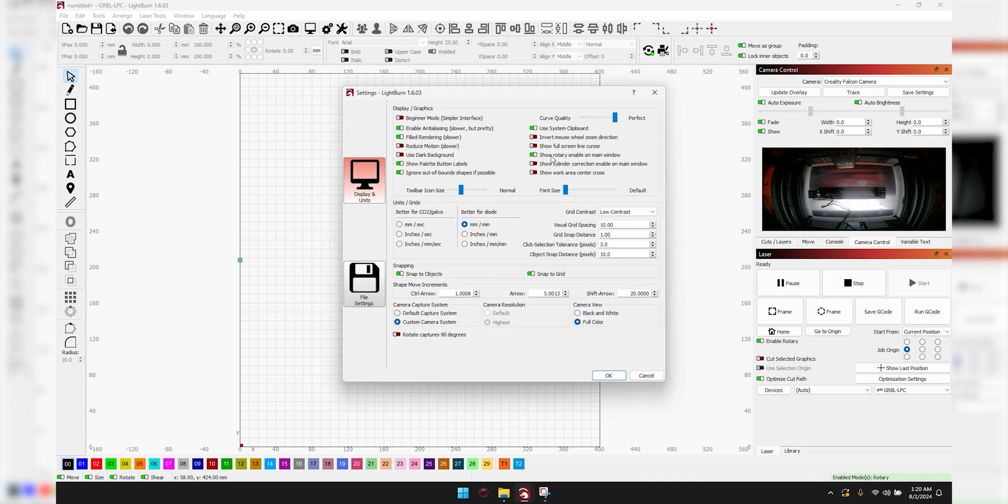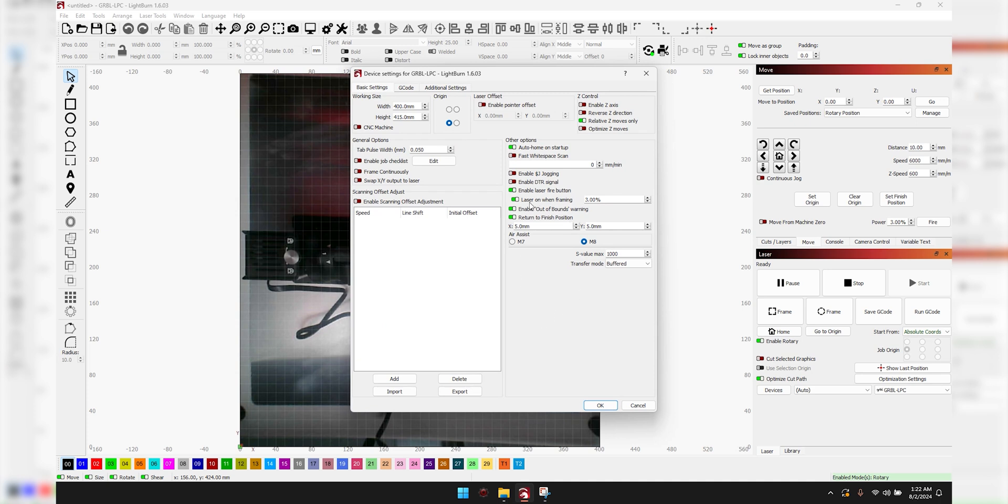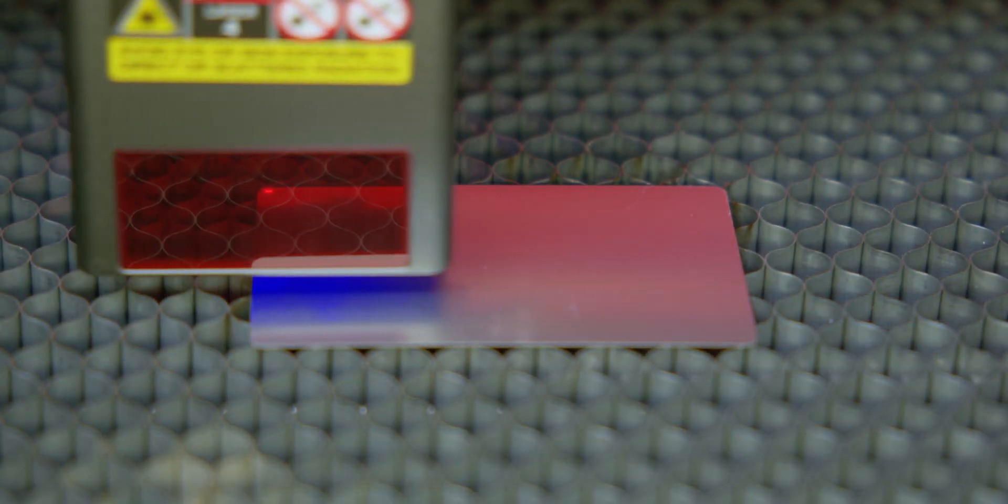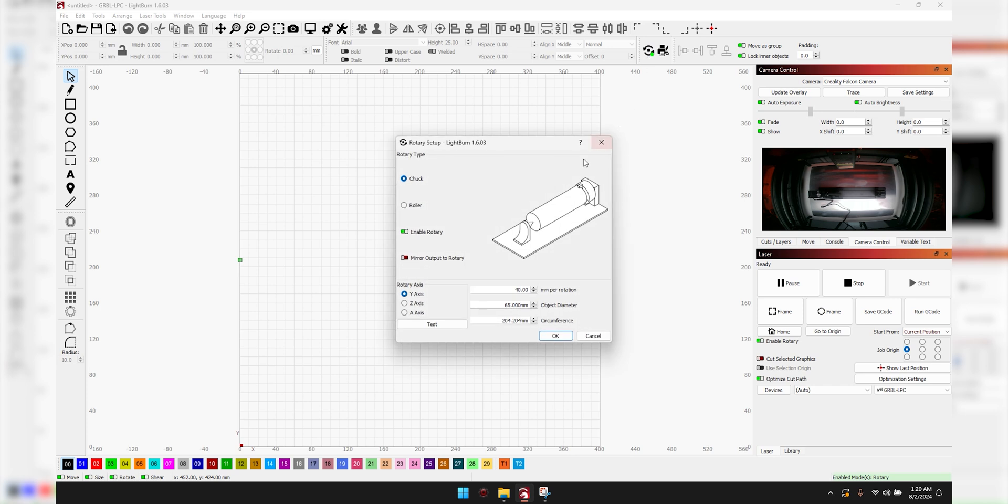Now that that's all set, in the Lightburn settings you'll want to enable 'show rotary' on the main window. In the device settings I highly recommend enabling the laser fire button and laser on when framing at 3%, which helps a ton when framing and making sure it's where you want to engrave. In the rotary setup, set it to chuck, make sure it's set to the Y-axis, and the millimeter pro rotation should be set to 40.